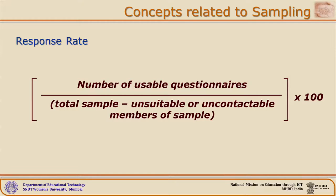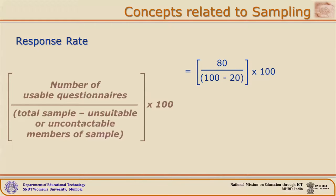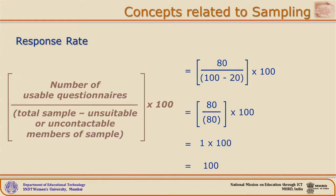Let us take an example. Imagine a questionnaire distributed to 100 people. Out of 100, 20 people did not respond at all. Amongst the 80 questionnaires gathered, all 80 were completely filled in. Using the formula: 80 (usable) divided by 100 (total) minus 20 (non-respondents), multiplied by 100 — that gives 80 divided by 80, multiplied by 100, which equals 100. So in this example the response rate is 100%, which is the best situation.